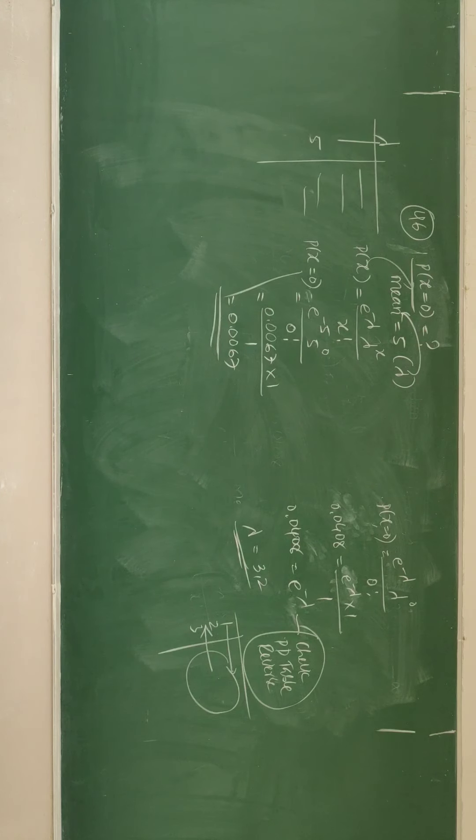Move to question number 45. In question number 45, it is like this: in a Poisson distribution, if P of x equal to 0 is 0.0408, then find lambda. They are asking lambda. How to find lambda — you apply the formula with x equal to 0. P(x) equal to e raised to minus lambda, lambda raised to x, divided by x factorial. This is the formula for Poisson distribution. They are asking x equal to 0, giving 0.0408.